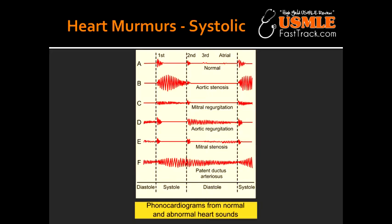Describe the area where mitral regurgitation can be heard the best. Mitral regurgitation is loudest at the apex and it radiates towards the axilla. It is enhanced by maneuvers that increase the TPR, such as squatting or handgrip.